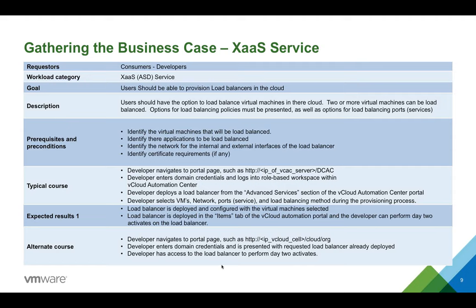It's a similar principle for any service you're going to allow provisioning in VCAC — you need to think about loads of different options around it. The typical course for this is very similar to what we had before: navigates to the portal, enters domain credentials — domain credentials, unique user credentials for VCAC, or something completely different if it's internet-facing. Developers deploy a load balancer from the advanced services section of the vCloud Automation Center portal, or it could be deployed in the catalog. Developers select virtual machine, network port, service, and load balancer method during the provisioning process.